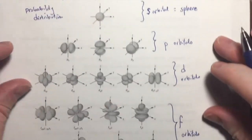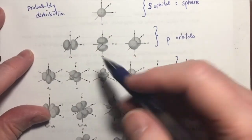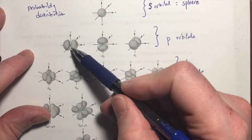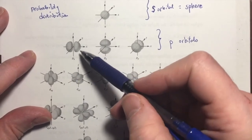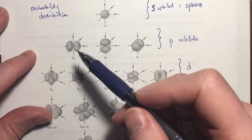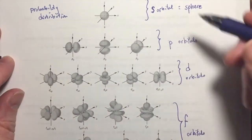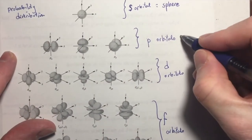There are p orbitals, and notice that a p orbital has two lobes. And so, you can think of these as kind of like dumbbells. So, we say that p orbitals are shaped like dumbbells.